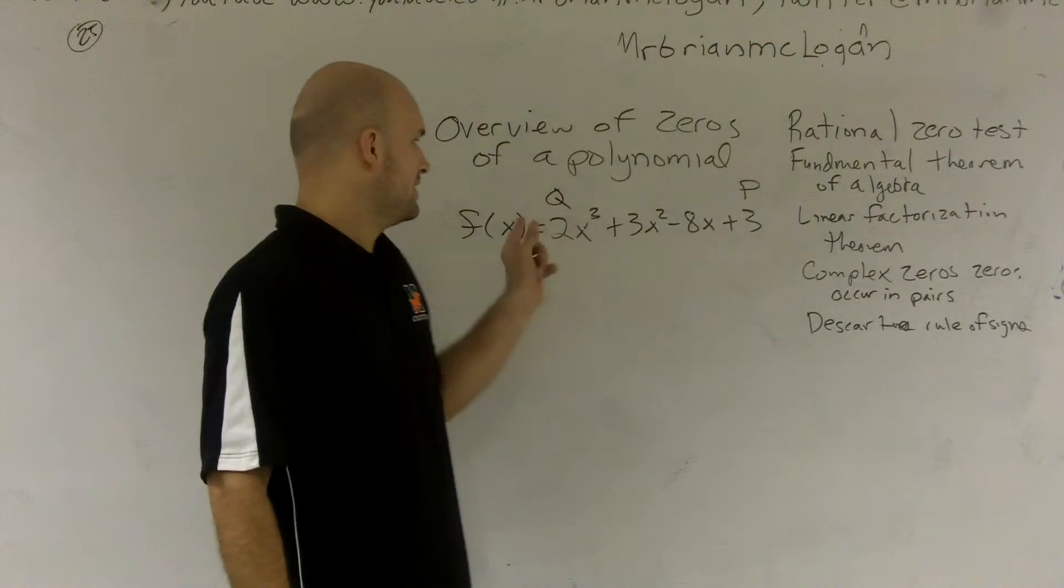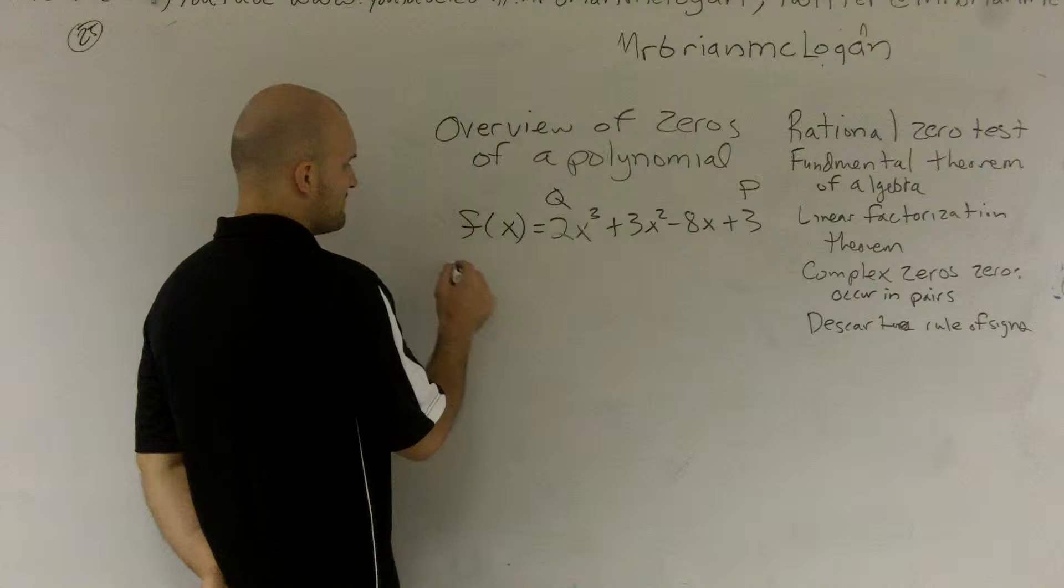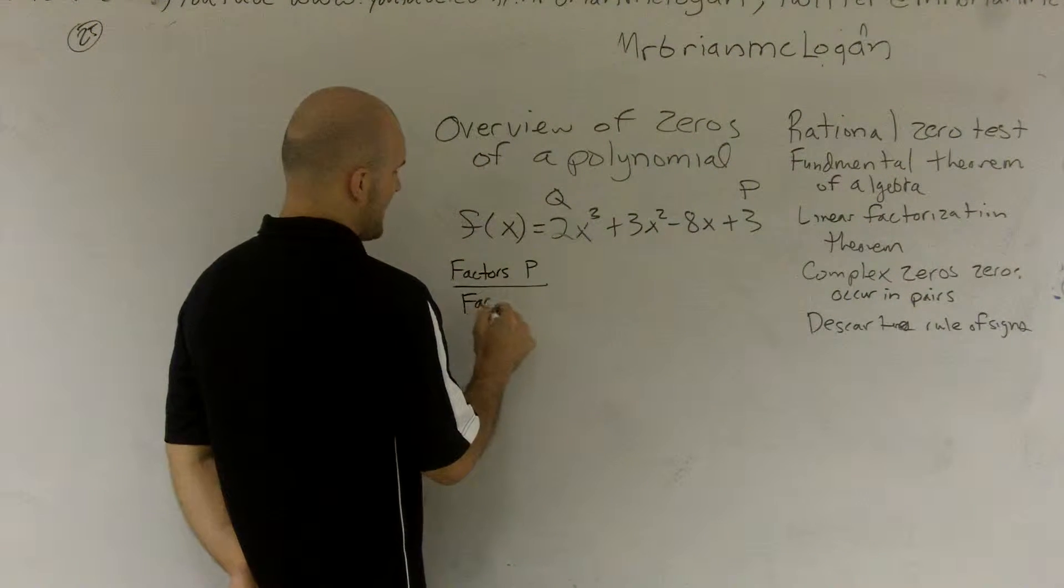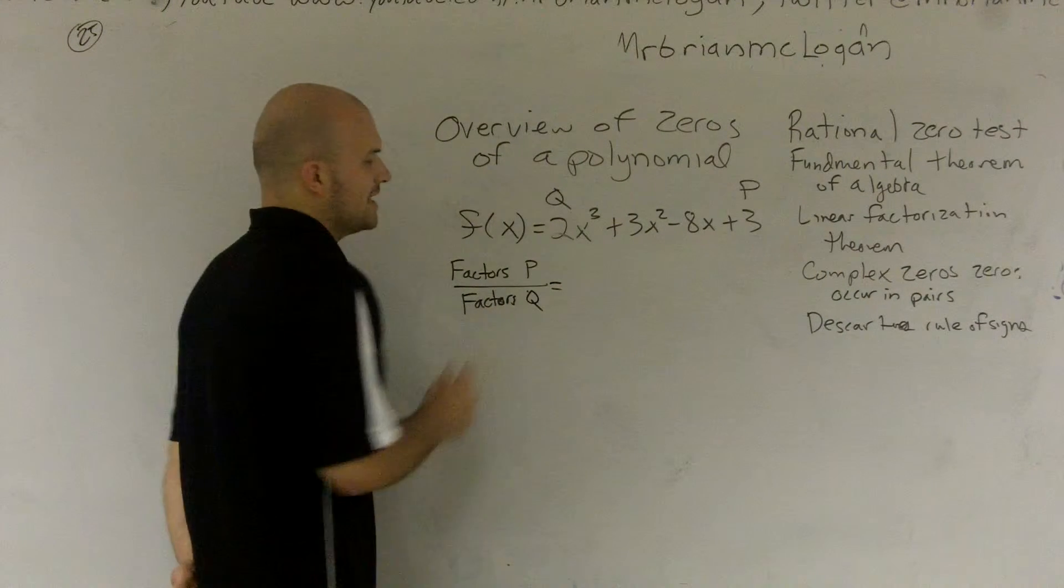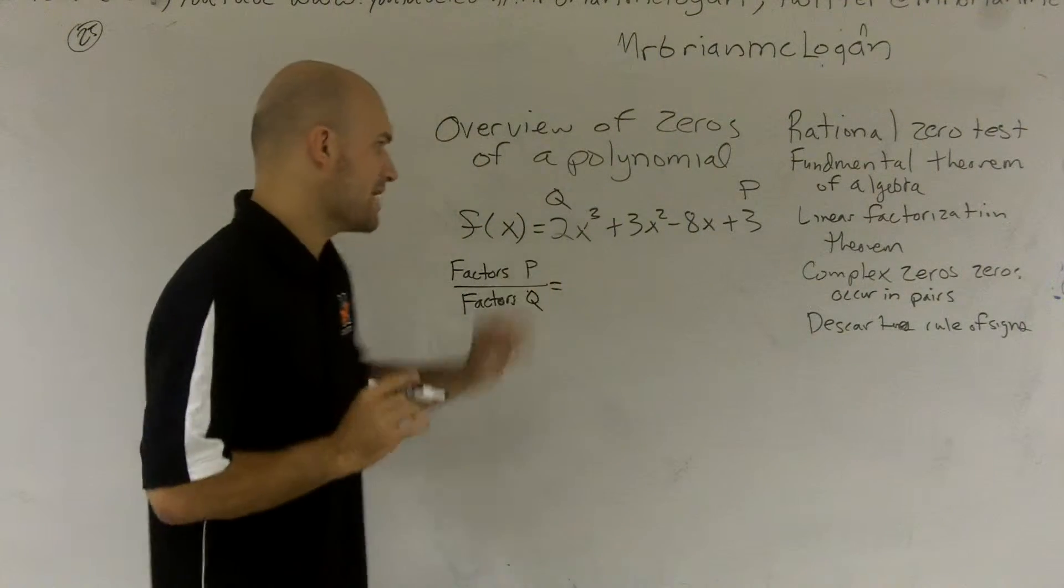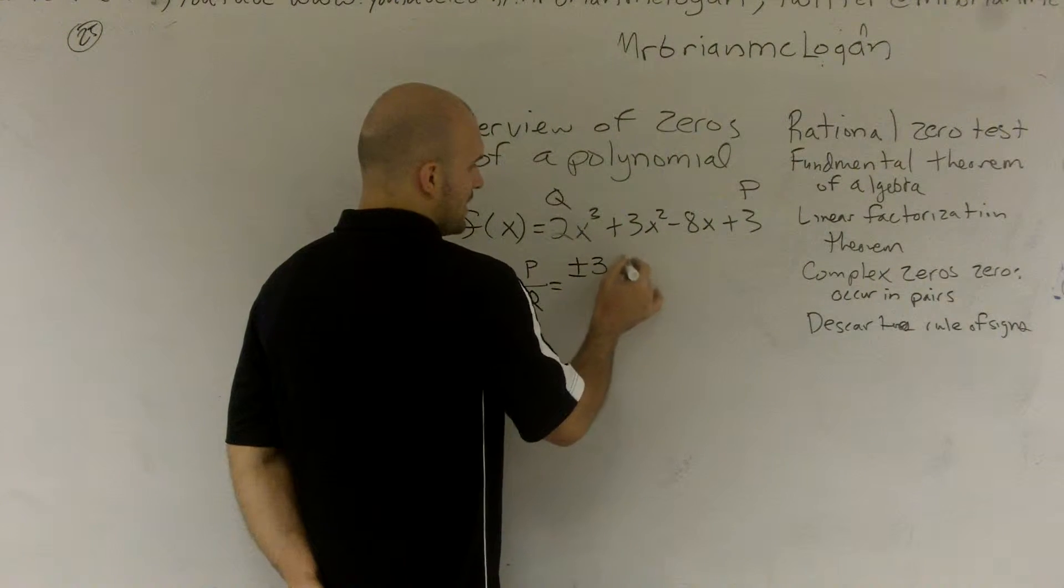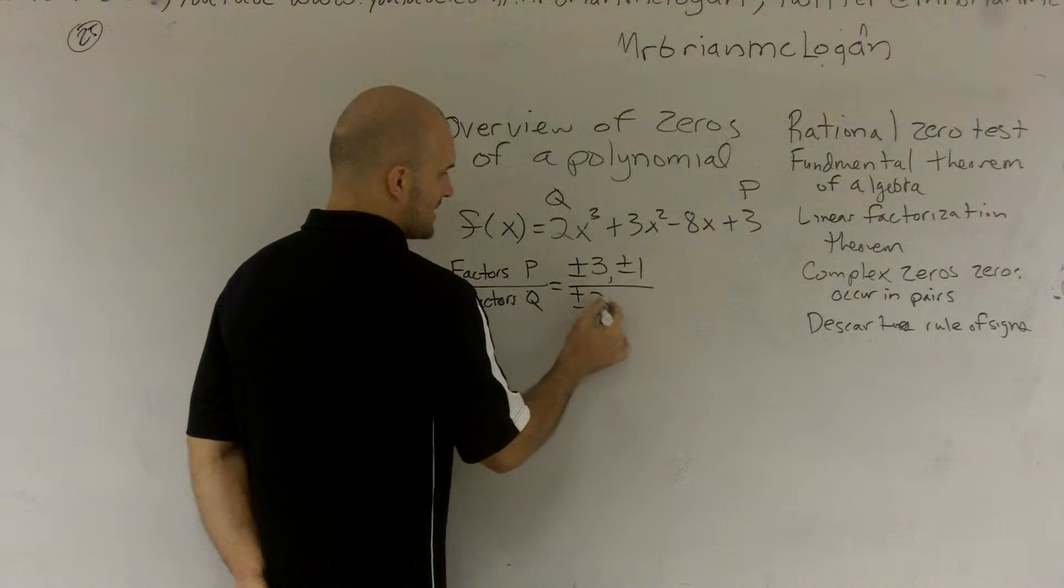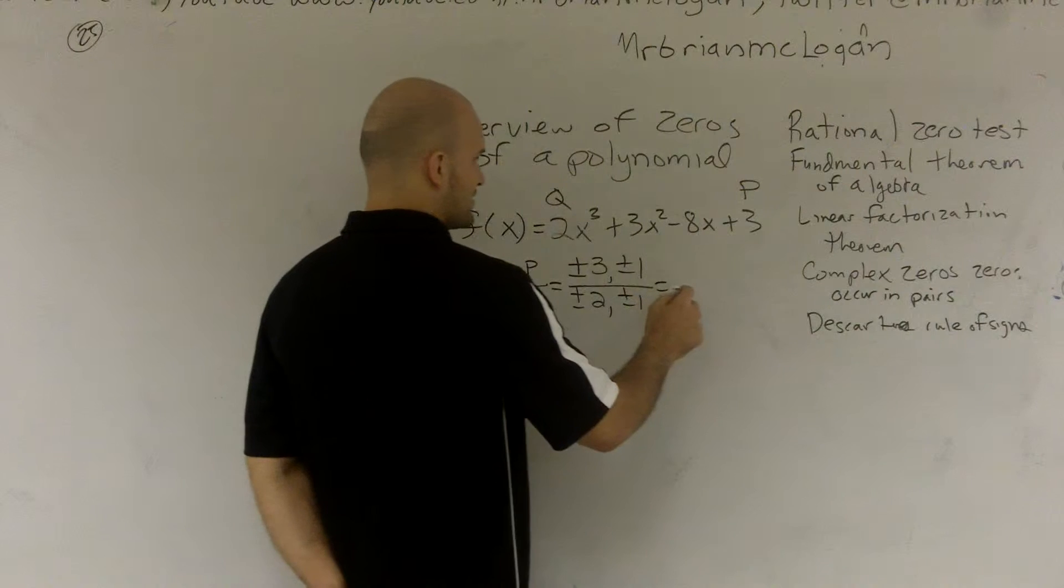We've labeled the constant as p and your leading coefficient as q. If we take the factors of p over the factors of q, that will tell us all the possible rational roots. So the factors of 3 are plus or minus 3 and plus or minus 1. The factors of q are plus or minus 2 and plus or minus 1.